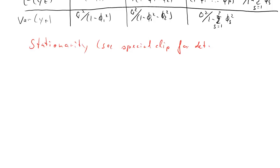So we'll look at the stationarity and we'll only look at the AR(p) process. And there's also a special clip for details here. So here's our AR(p) process with p lags, y_t, explained by p lags of y.